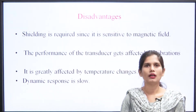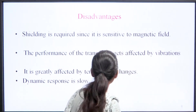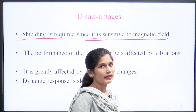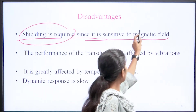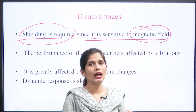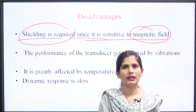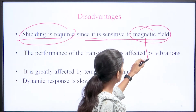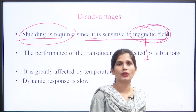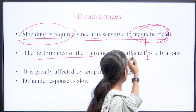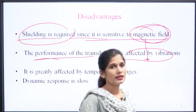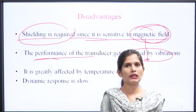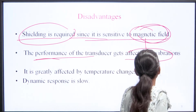There are a few disadvantages of LVDT. First, shielding is required since it is sensitive to magnetic fields — the construction must be properly shielded so that the output is not distorted by magnetic fields. Second, the performance of the transducer is affected by vibrations and shocks, which disturb the circuitry and the output voltage.